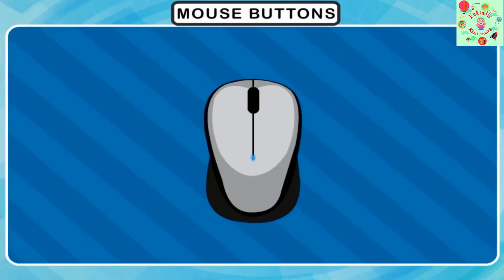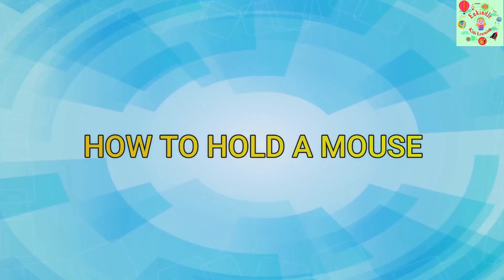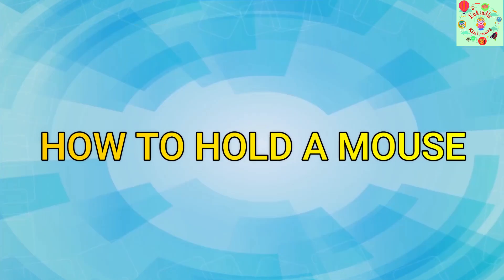Now let's study about mouse buttons. A mouse has two or three buttons on it. The button on the right side is called the right mouse button, and the button on the left side is called the left mouse button. They are used for left click and right click.